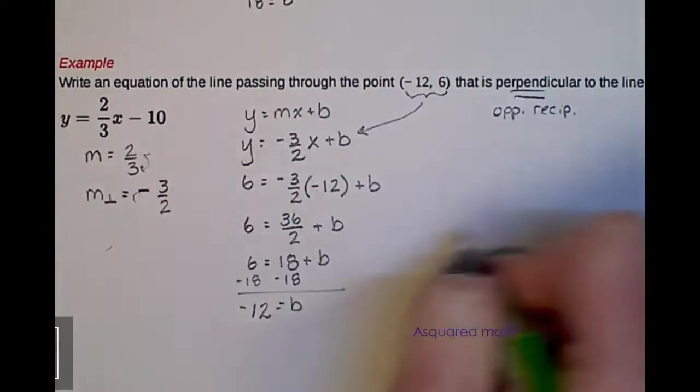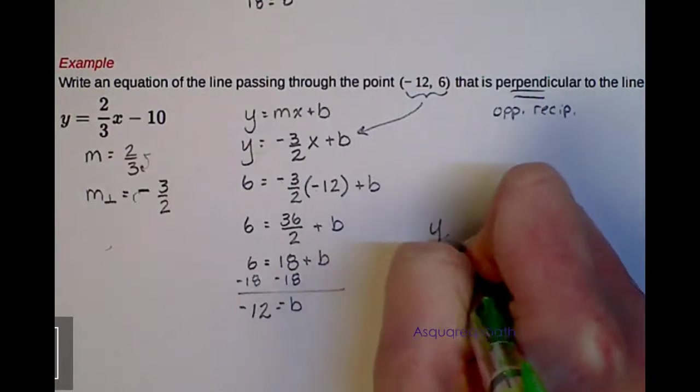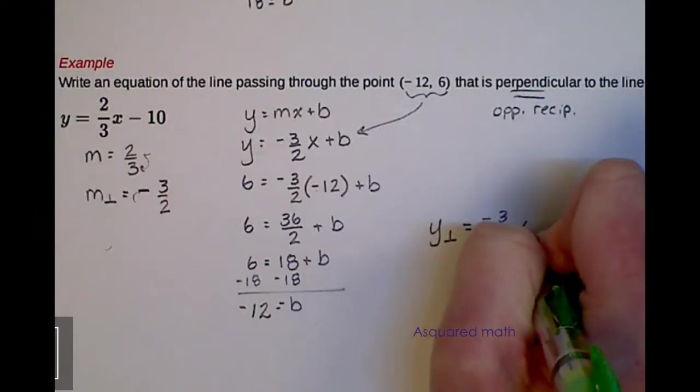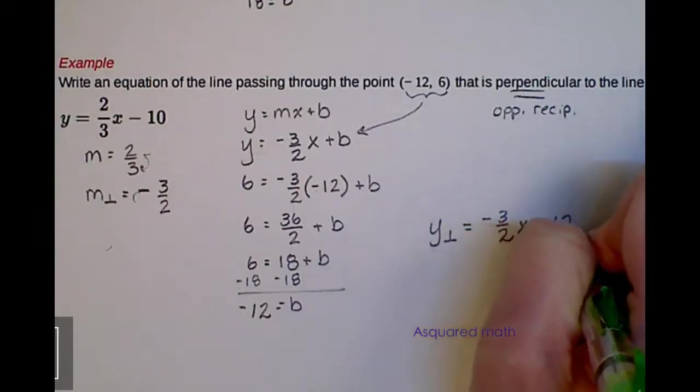So that means our equation for the perpendicular is y equals negative 3 halves x minus 12.